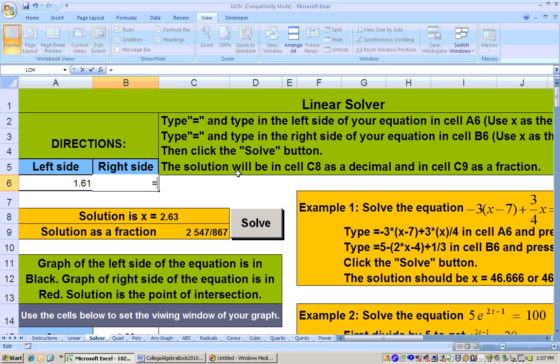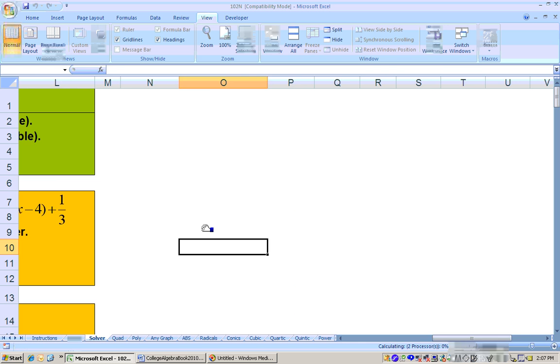And then on the other side I need to type in equals 3 times x. We have to use x as the variable, and we have to say times in between minus 1 because the other side of the equation was 3t minus 1. Then just hit enter, click the solve button, and we get,